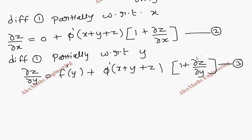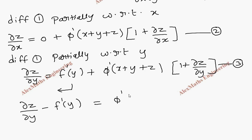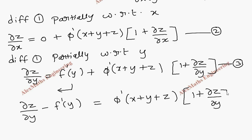Now in the third expression, let's take the f dash term to the other side. So we get dou z by dou y minus f dash of y equal to phi dash of (x plus y plus z) into (1 plus dou z by dou y). So we just rewrite the third expression.